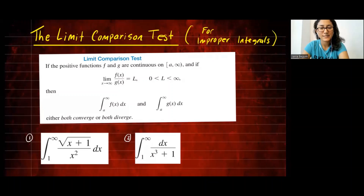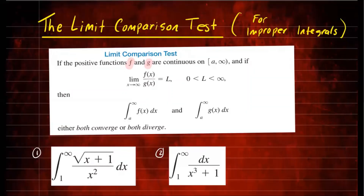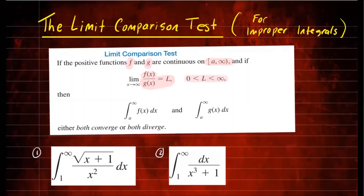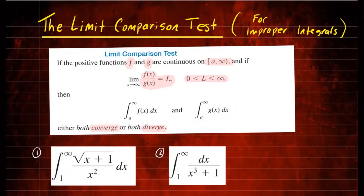So let's take a look at this statement. If we have two positive functions f and g, and they're continuous on some interval a to b, and if the limit of f(x) over g(x) is some number L, where L is a positive real number, then both integrals f and g either converge together or diverge together. So if you construct a function g and that integral converges, and you take the limit of f over g equal to some real number L, then f will also converge. Or if g diverges, then f will also diverge.